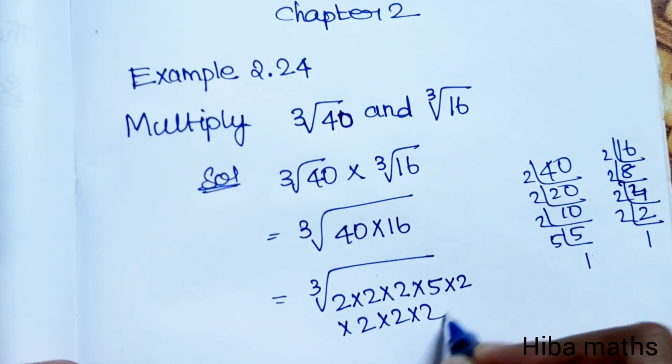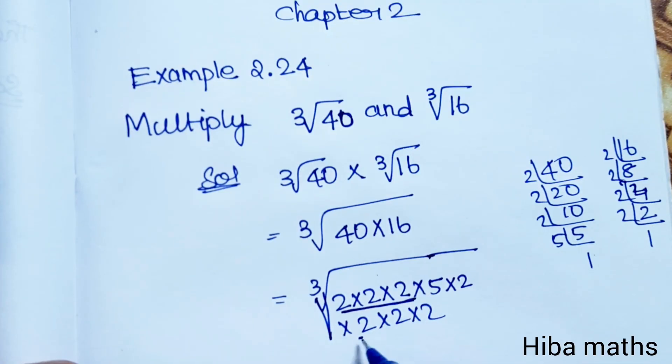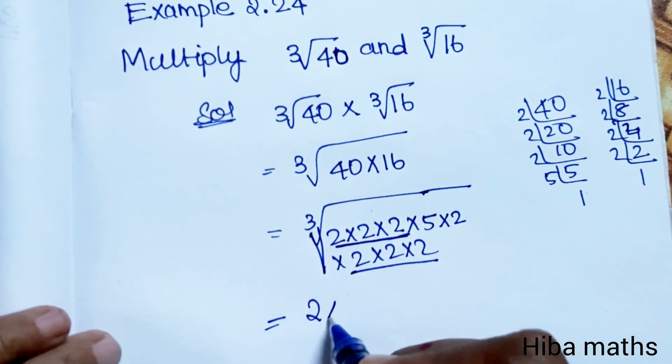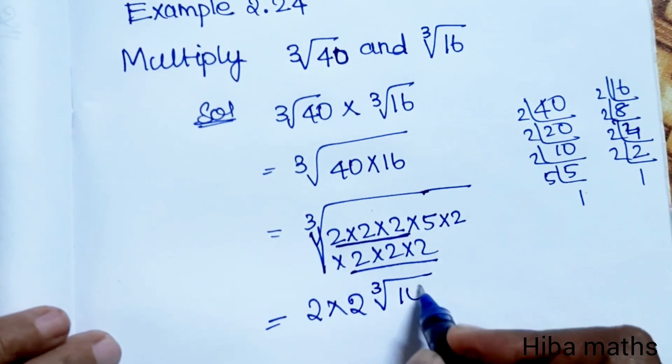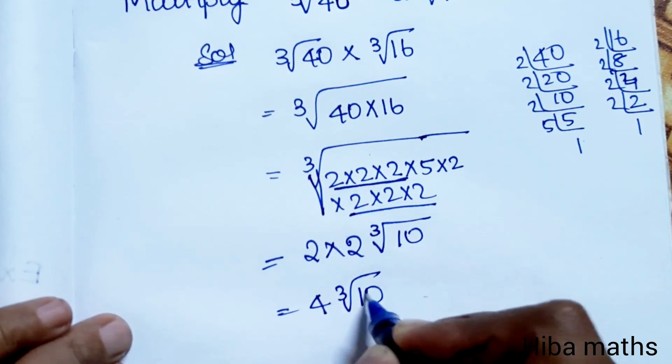We have 2, 2, 2, 2, 2, 2, 2 and 5 under the cubic root. Taking three 2's out gives us 2, and another three 2's gives us 2 again. So 2 times 2 equals 4, cubic root of 10 is the answer.